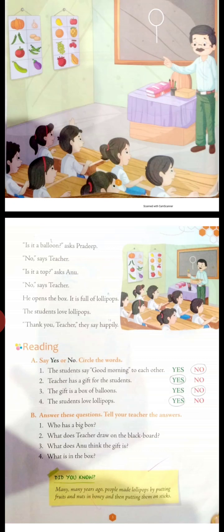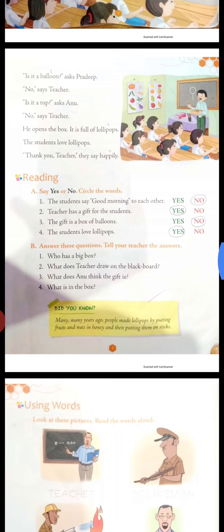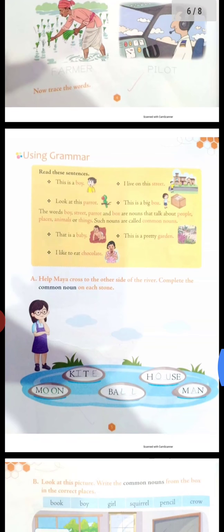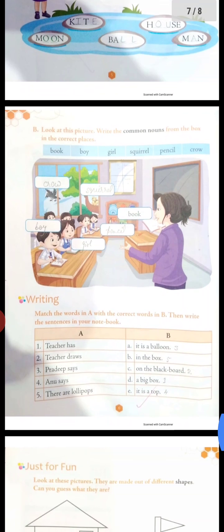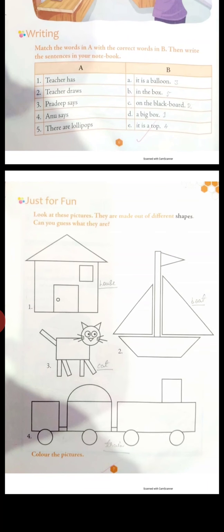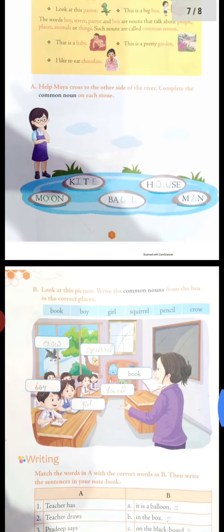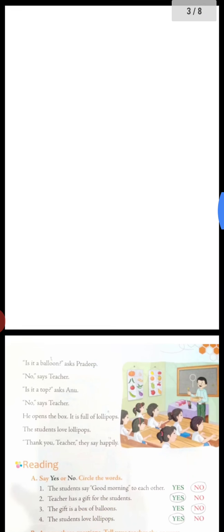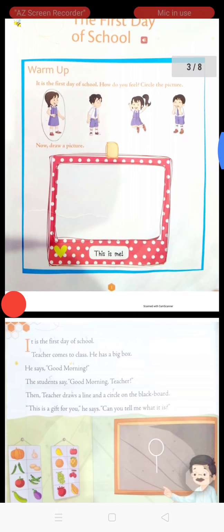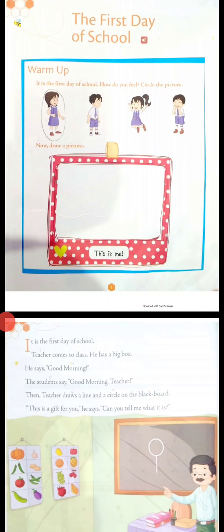You have to read this story three times — it's your homework. And you have to do page numbers three, four, five, six, and seven — that means pages three to seven. And page number one also. It's your homework. You have to do it.